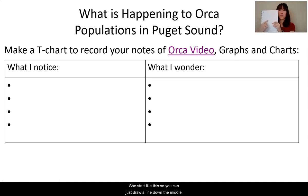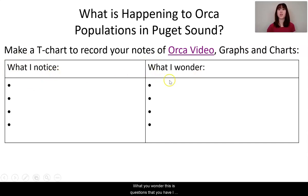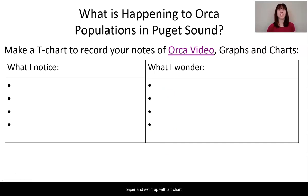Draw a line down the middle and make a section for what you notice — observations or things you hear during the video — and a section for what you wonder, which are questions that you have. I would like you to have at least four things written down in each section. If you haven't done this already, please pause the video, grab that paper, and set up your t-chart.